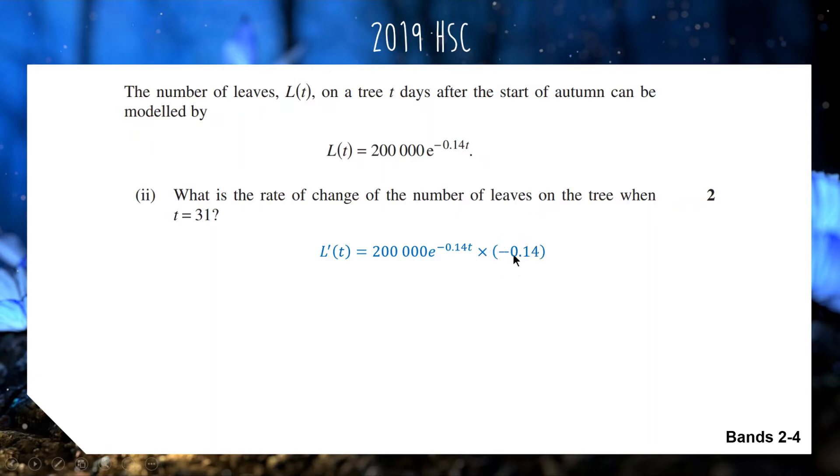This question is nicely designed, so we get a nice whole number: negative 28,000 e to the negative 0.14t as our derivative. This gives us the rate of change. If we substitute t equals 31 into this, we get L dash at 31. Changing the t to 31 gets us an answer of around negative 365.